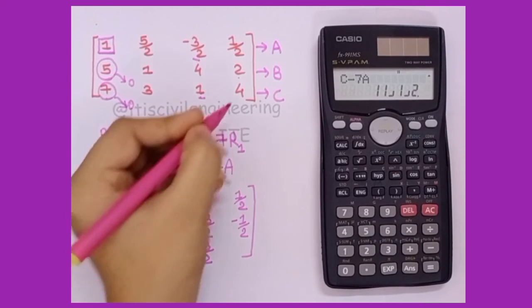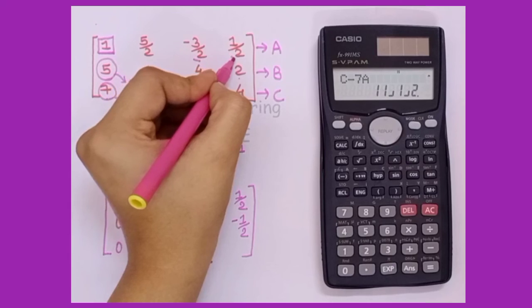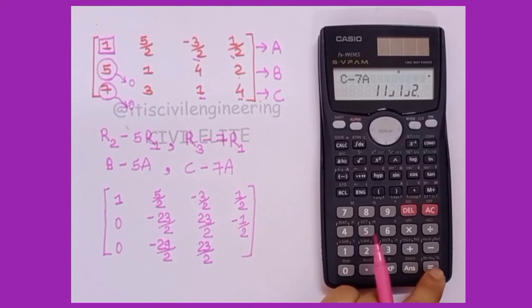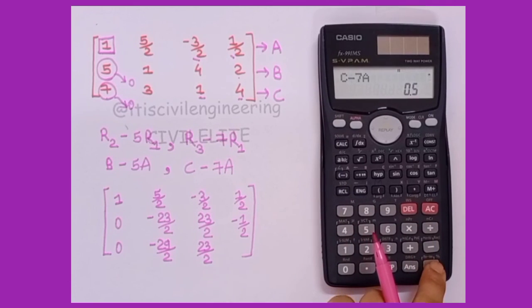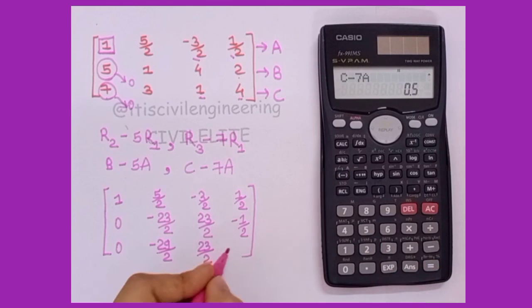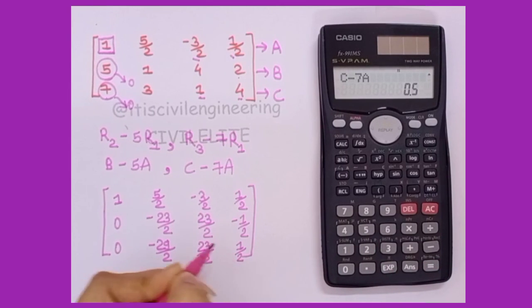And last we have 4 and 1 by 2. We'll just input that: 4, then equal to, 1 by 2, and equal to. We get 0.5, which is 1 by 2.